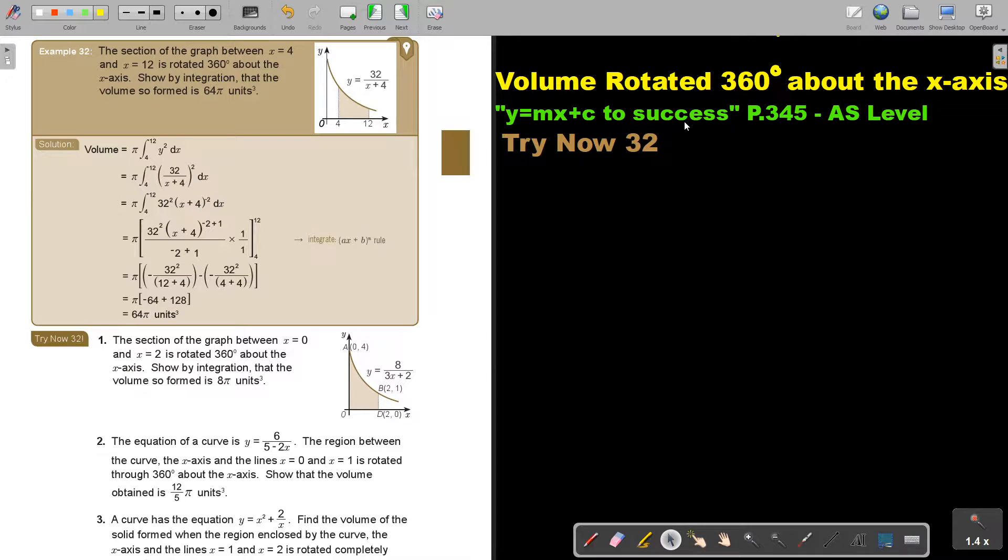Let's look at another example. The section of the graph between X is 4 and X is 12 is rotated 360 about the x-axis. Show by integration that the volume so formed is 64 pi units to the power of 3.